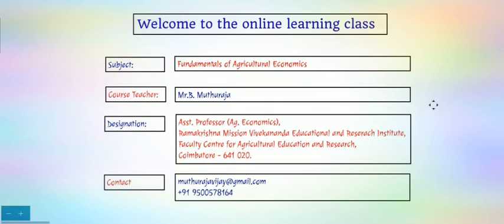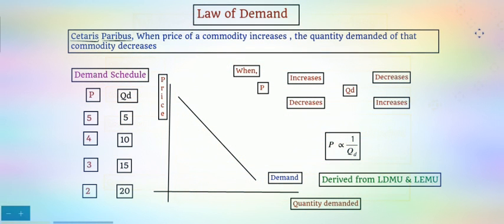Dear students, welcome to the online learning class for the subject Fundamentals of Agricultural Economics. Today we are going to see about the law of demand. We have seen in the last lecture that demand is the quantity of a commodity that a consumer is willing to buy at a specific price, place, and time. We mainly focus on price — at what price, how much quantity the consumer wants to buy.